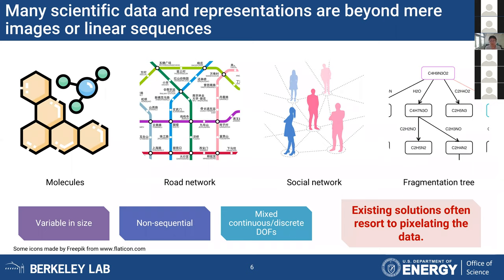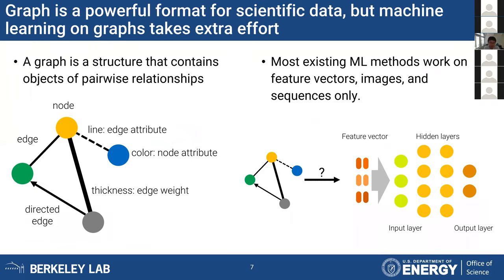In the real world, many scientific data that we're interested in cannot fit into that form. These are data that have a largely varying size, where the data might have a non-sequential relationship, and might have a mixture of continuous and discrete degrees of freedom. The existing approach for dealing with those kinds of data in machine learning is to first use a fingerprint algorithm to convert those data into feature vectors, or to convert them into an image and feed them into an existing machine learning pipeline. But another way — potentially a much more powerful way — is to use a graph to encode such information.